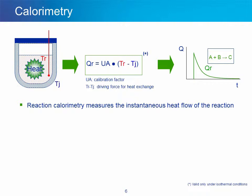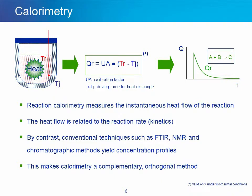Reaction calorimetry actually measures the instantaneous heat flow from the reaction. The reaction rate is related to the reaction heat flow, which makes rate the primary measured parameter of calorimetry. This is different from conventional methods like chromatography or spectroscopy, which give concentration as a measured parameter. Rate, in this case, is the derivative of concentration as a function of time. In a way, this makes calorimetry an ideal complementary analytical method.